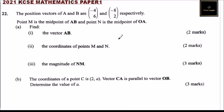This is question number 22. We are told the position vectors of A and B are (-4, 6) and (-8, 2) respectively. Point M is the midpoint of AB and point N is the midpoint of OA. Find: roman numeral one, the vector AB.